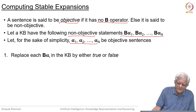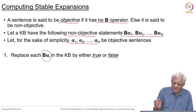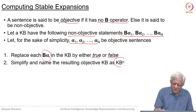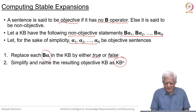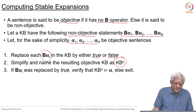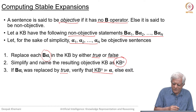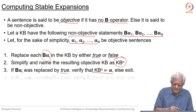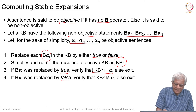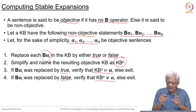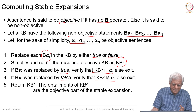Then you do the checks. If B(alpha) was replaced by true, verify that alpha is entailed by the extended knowledge base. If not, that cannot be a stable expansion. Likewise, if B(alpha) was replaced by false, make sure that alpha is not entailed by the knowledge base. If both these conditions are satisfied, then what you are left with is an objective knowledge base, and the entailments of this objective knowledge base are the objective part of the stable expansion.